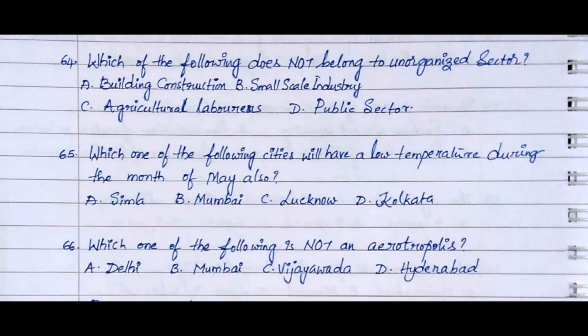Question 64: Which of the following does not belong to the unorganized sector? Option A. Building construction, Option B. Small-scale industries, Option C. Agricultural laborers, Option D. Public sector. The answer is Option D. Public sector.